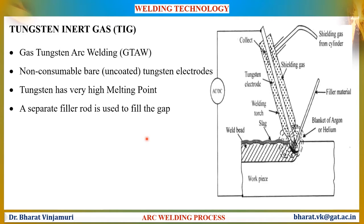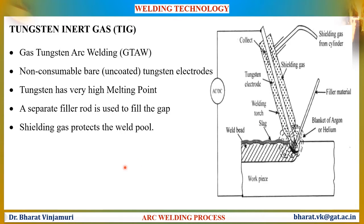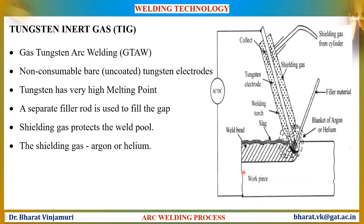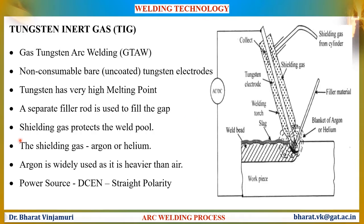A separate filler rod will be used to fill the gap between the two metal pieces. The shielding gas in this process will protect the weld pool. The shielding gas can be argon or helium — argon is widely used as it is heavier than air. Unlike the MIG process, in this process it uses DC power supply with straight polarity.